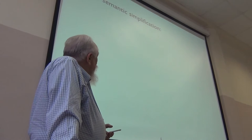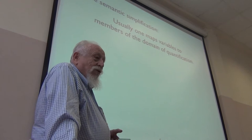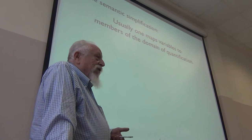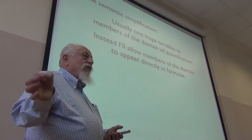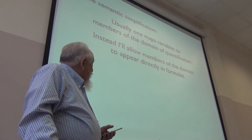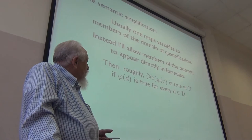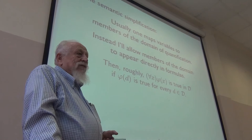Some simplifications: when doing first order logic, you usually work with a domain and an evaluation that assigns members of the domain to the free variables of your formula. What I'll do instead is write members of the domain into the formulas themselves — so instead of x whose value is a, I'll just write a. So for all x, phi of x is true in a domain D if phi is true for each thing in the domain.